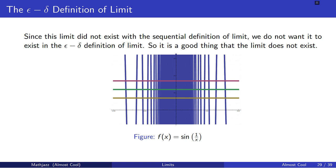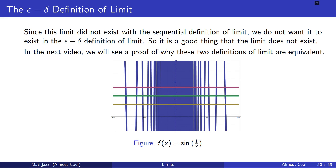And it's a good thing — this matches the sequential definition of limit, where this limit didn't exist in that definition either. In the next video, or maybe a video after that, we are going to see a proof of why these two definitions of limit are equivalent.